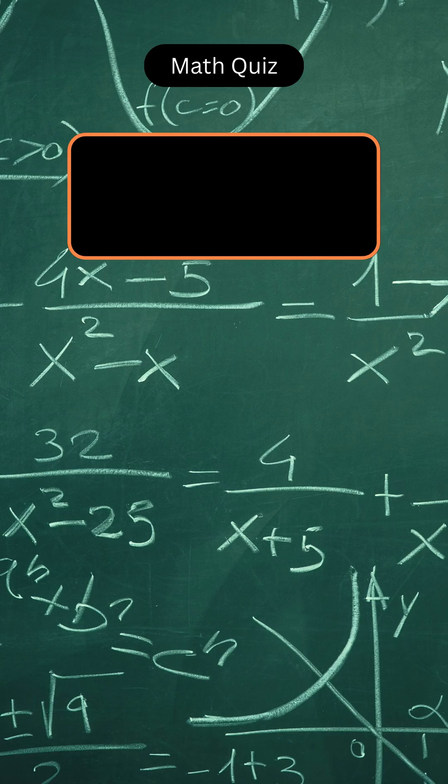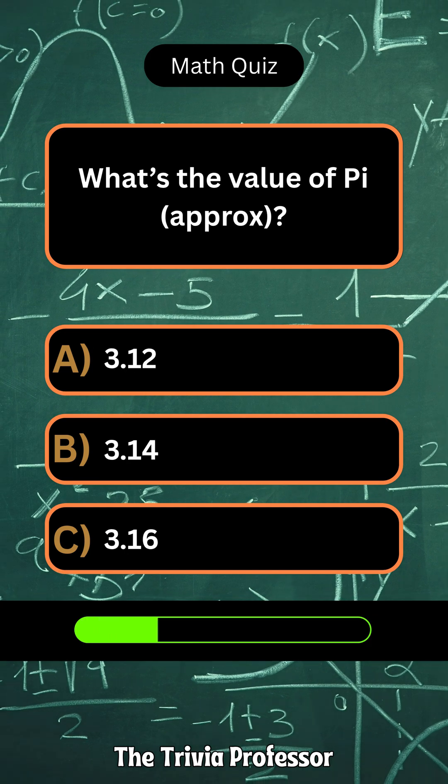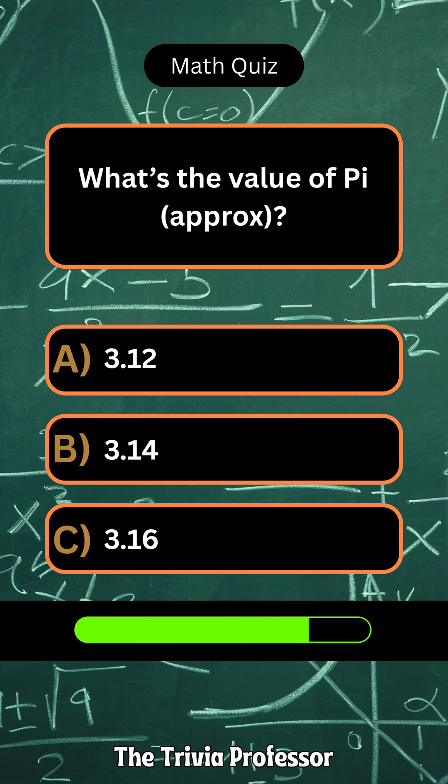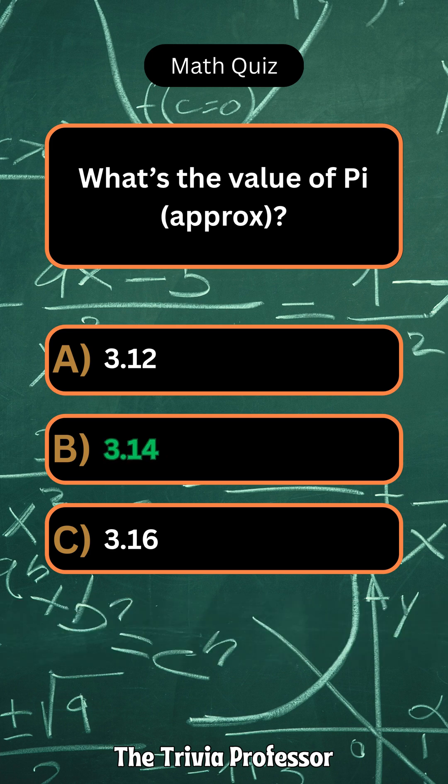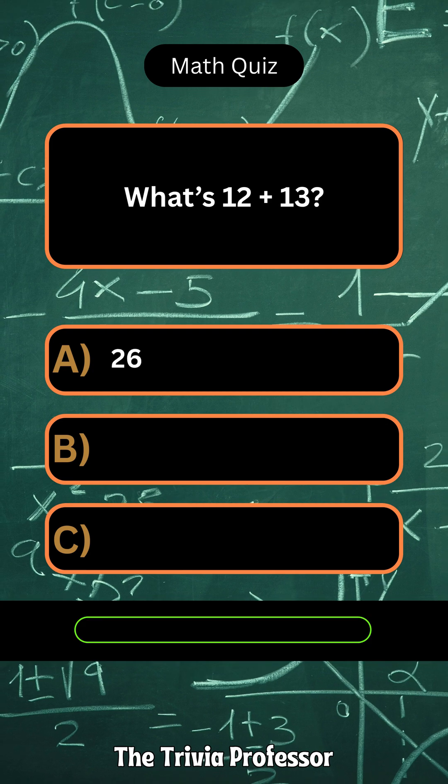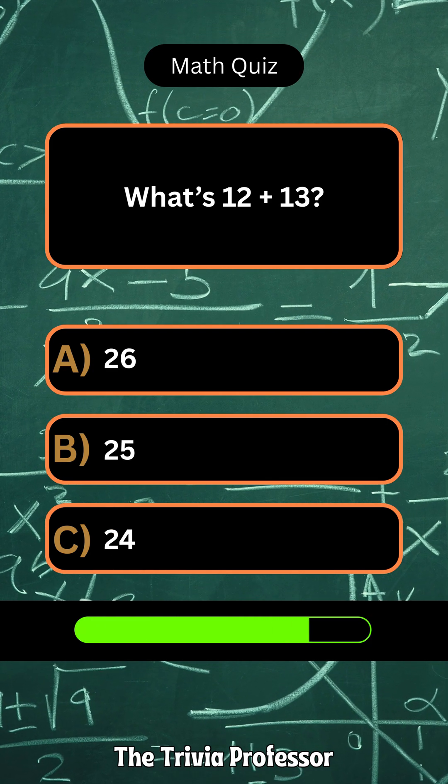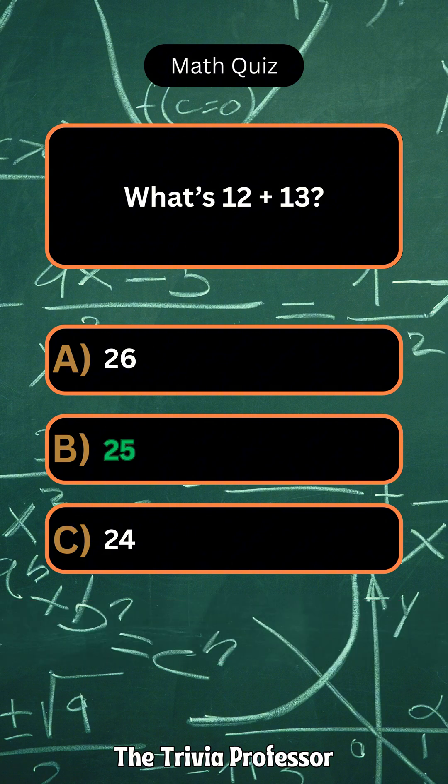Let's see if you're one of them. What's the value of pi? Approximately 3.14. What's 12 plus 13? 25.